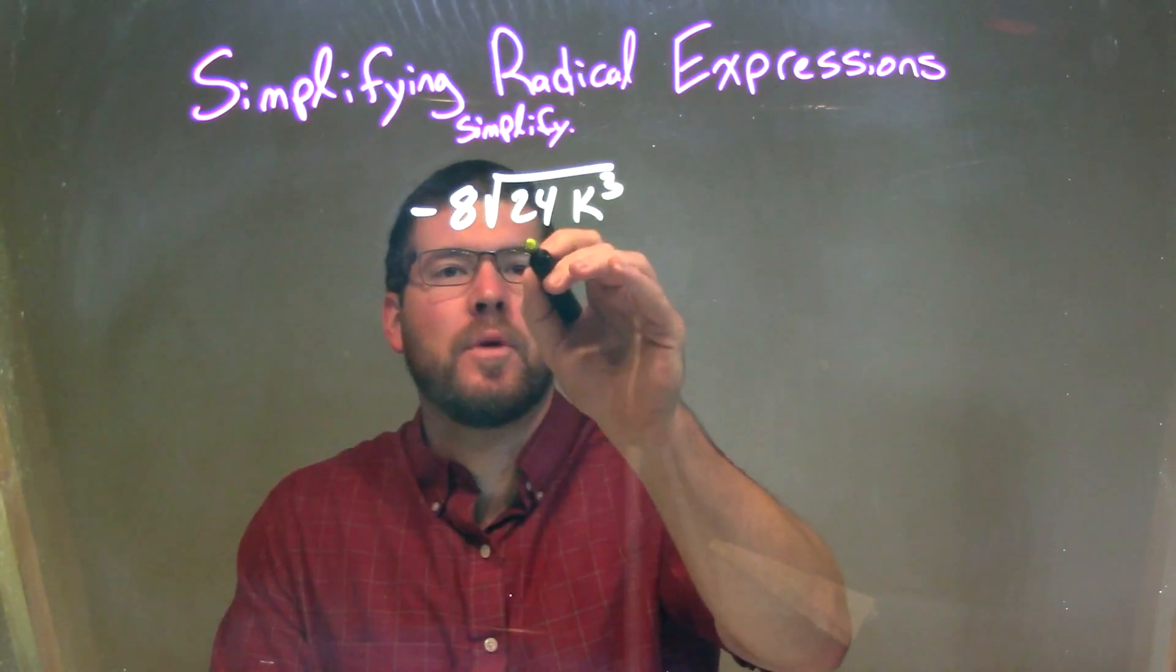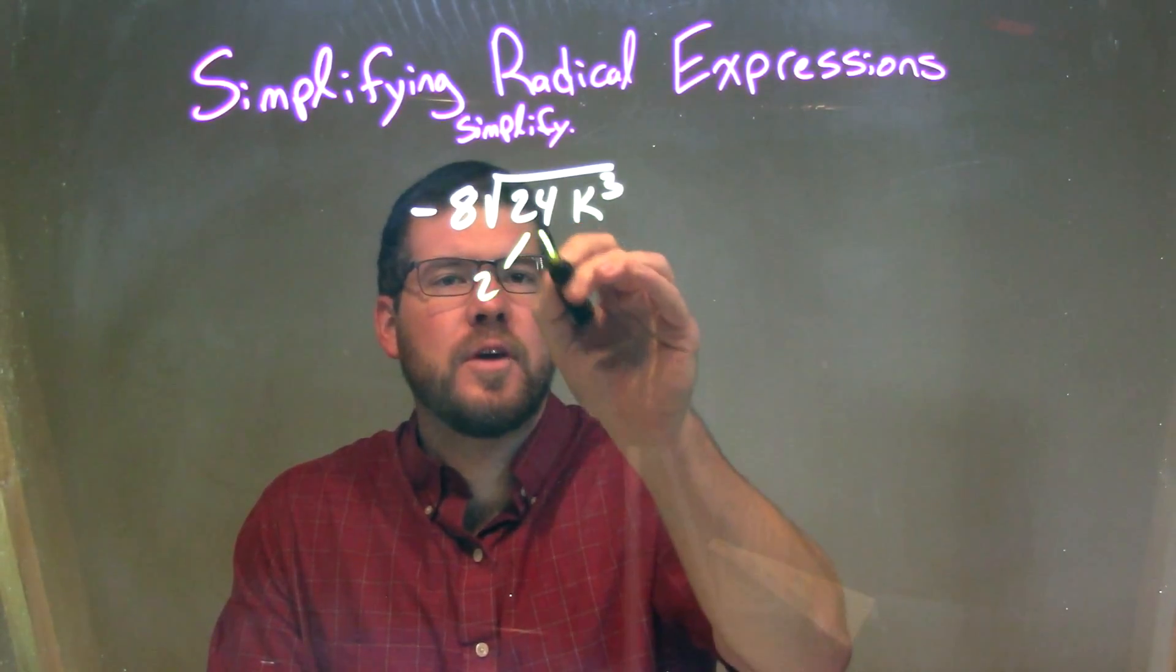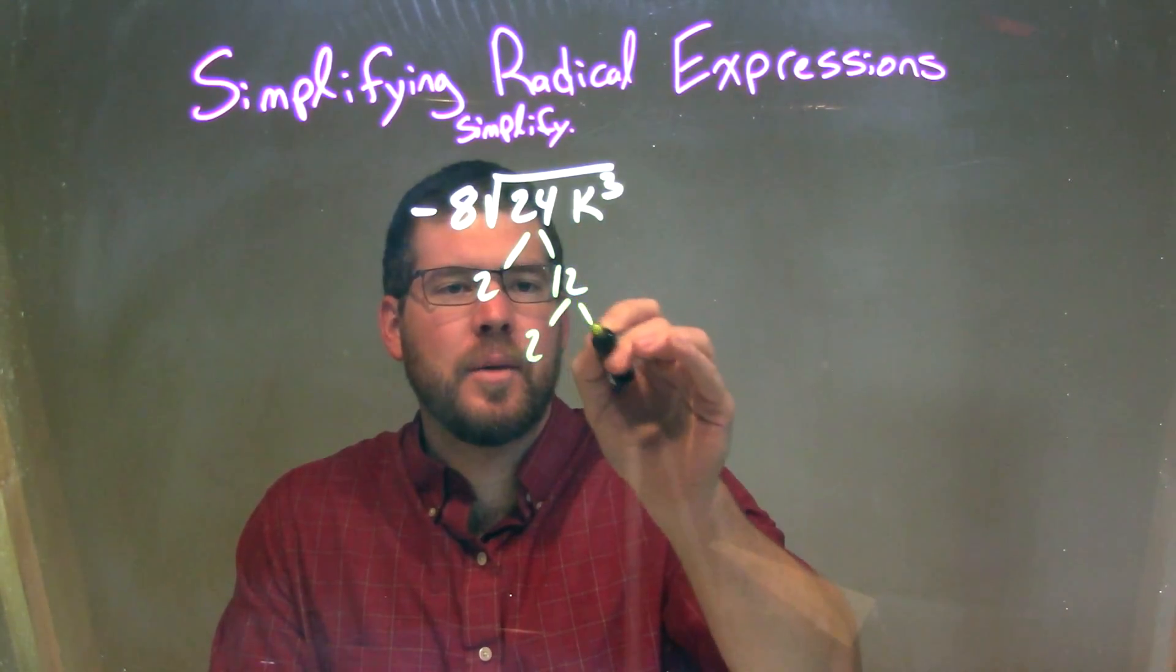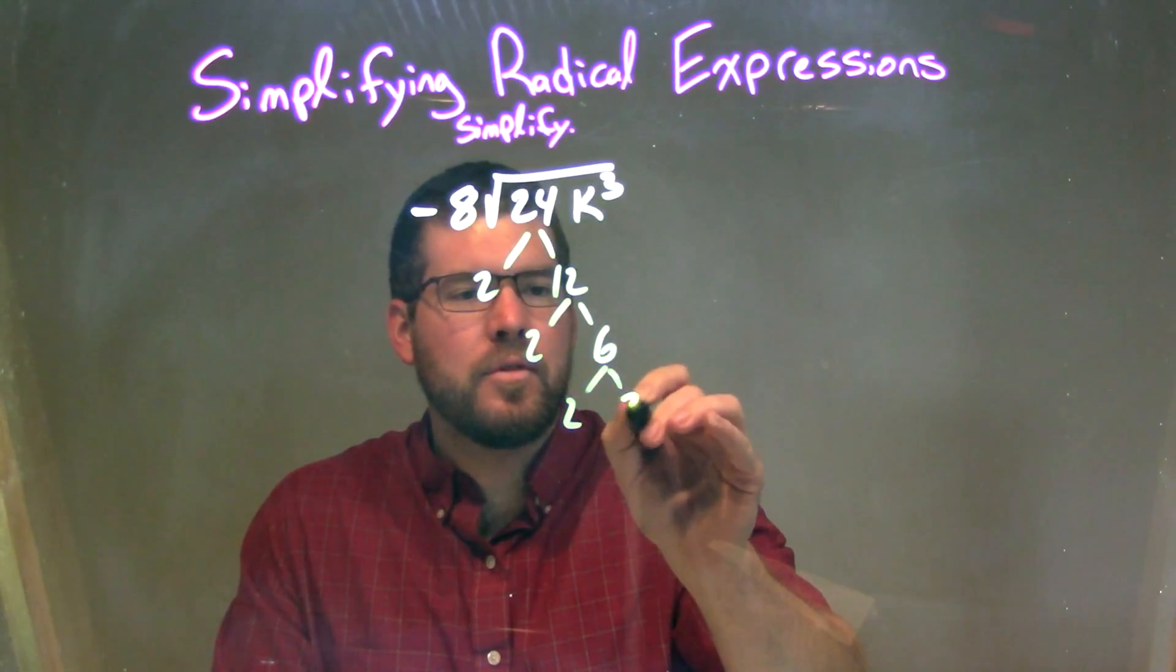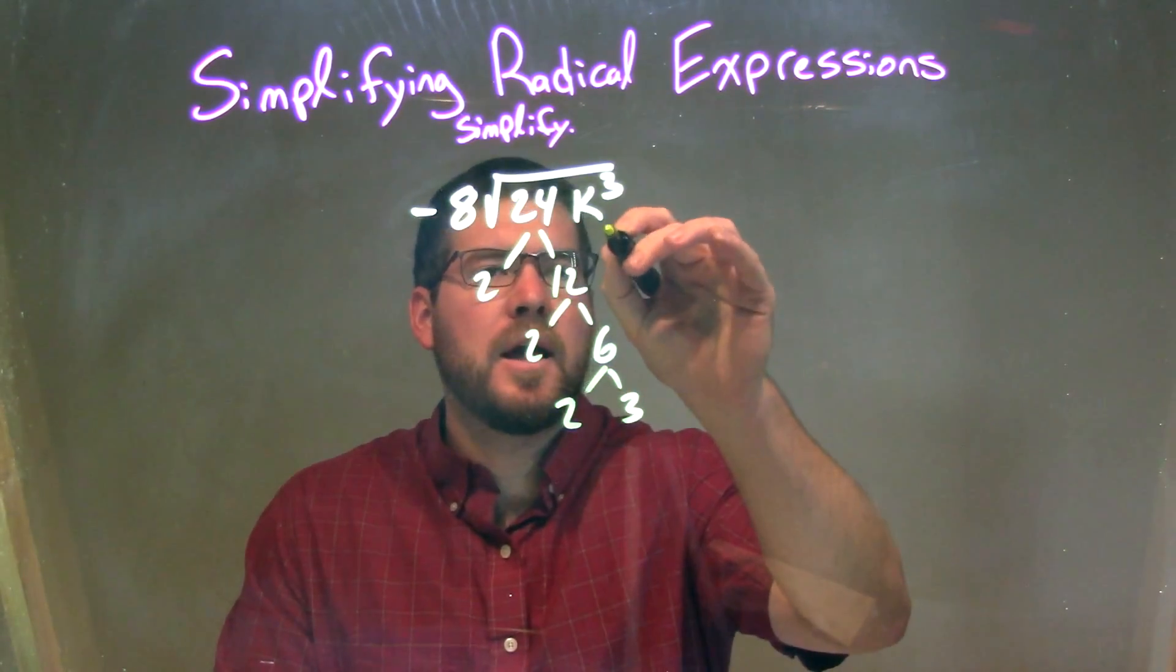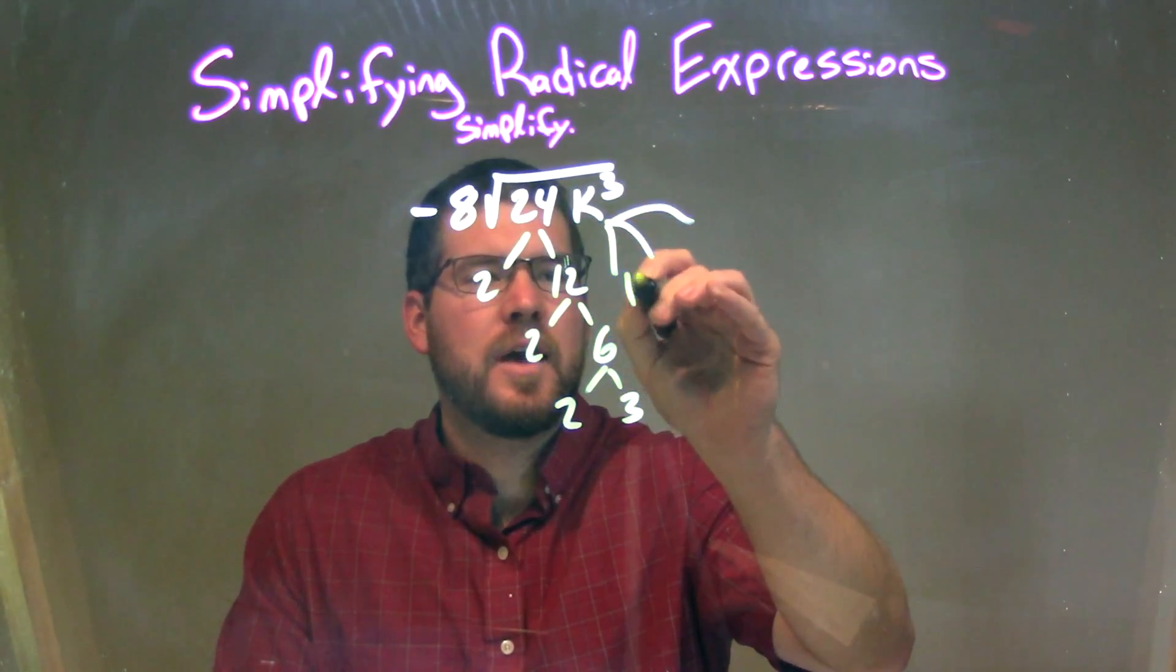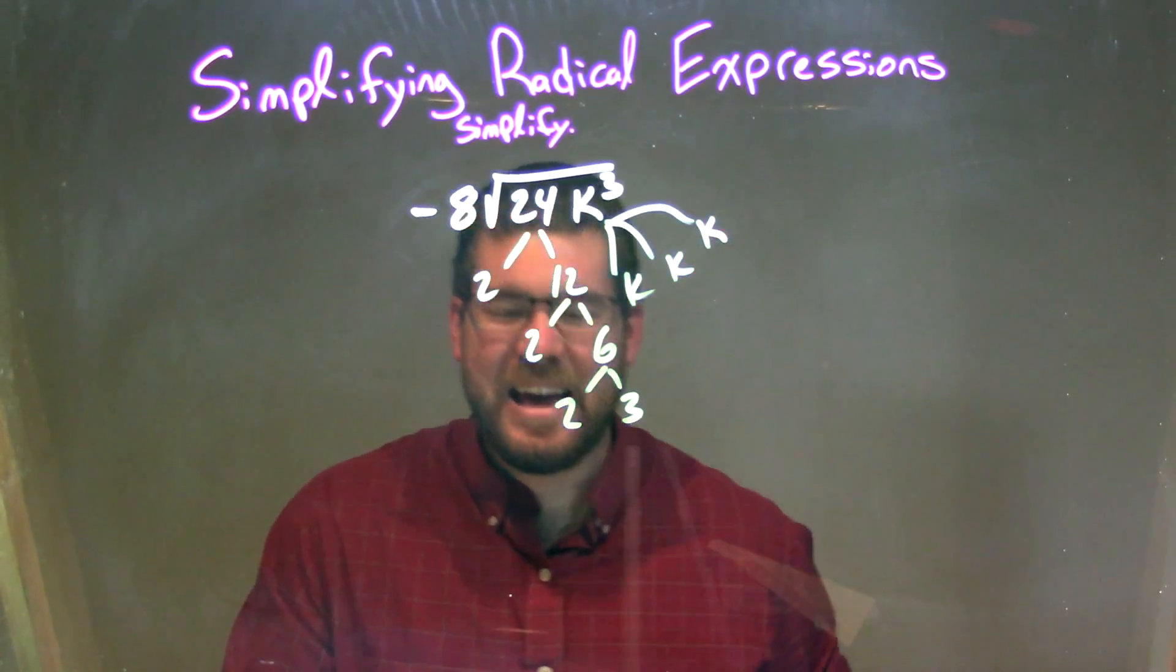Breaking down 24 to our prime factorization: it's 2 times 12, and 12 is 2 times 6, and 6 is 2 times 3. K to the third is just k times k times k.